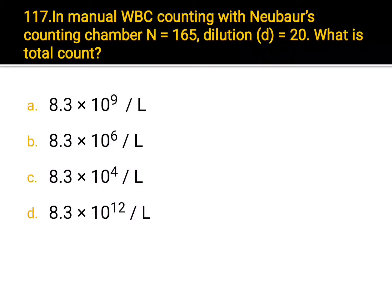In manual WBC counting with Neubauer counting chamber, N equals 165, dilution D equals 20. What is the total count? A. 8.3 × 10⁹ per liter, B. 8.3 × 10⁶ per liter, C. 8.3 × 10⁴ per liter, D. 8.3 × 10¹² per liter. Correct answer: A. 8.3 × 10⁹ per liter.